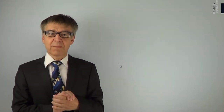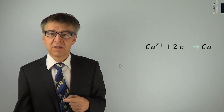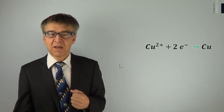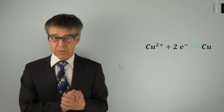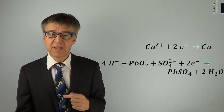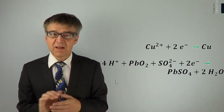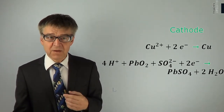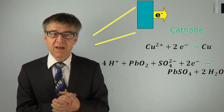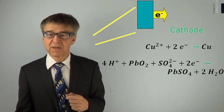In the electrolysis of copper chloride, copper is produced at the negative terminal. The following reduction process takes place. In the lead dioxide–lead battery, the reduction of lead(IV) to lead(II) sulfate takes place at the positive terminal. In the electrolysis cell, the reduction is enforced and the cathode is negative. With the galvanic cell, the reduction runs voluntarily and the cathode is positive.